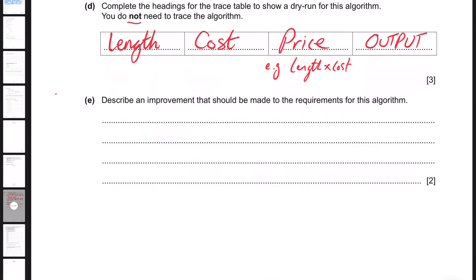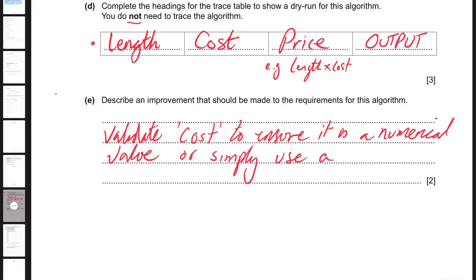Part E: Describe an improvement that should be made to the requirements of the algorithm. What could we do? We've validated length using a range check. What other range checks could we use, or what other types of checks could we use? We could validate cost to ensure it is a numeric value, or simply use a presence check to ensure a value has been entered. Validate cost. Just thinking, for me I think that would do. So that was question eight complete.